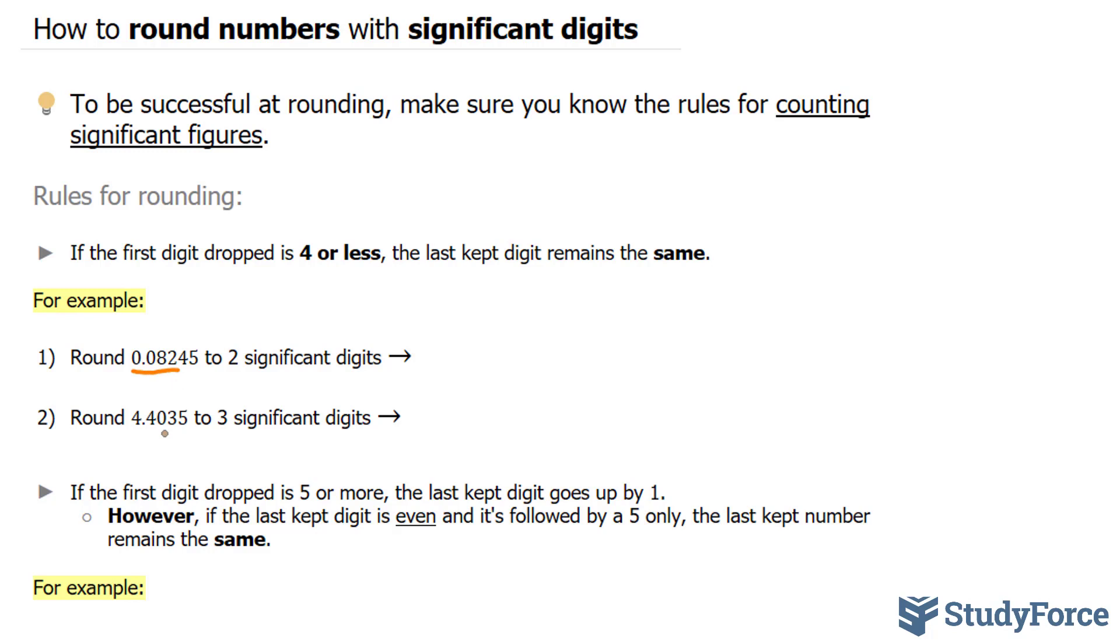So the first rule says that if the first digit dropped, and the first digit being dropped is a 4, and if it's 4 or less, the last kept digit, which is this 2, must remain the same. So our final answer becomes 0.082.